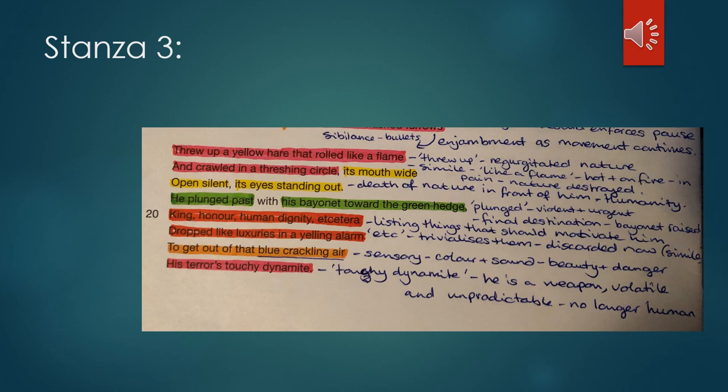And then the final line, which I believe is the point where he becomes and loses all of his humanity and becomes a machine or a weapon, is his terror's touchy dynamite. Touchy dynamite in particular tells us he's a weapon. He's volatile, unpredictable. He's no longer in control. And there's a sense of kind of urgency, of violence, of unpredictability here with him. And he's touchy. It's like he is about to explode. He's been put at his most extreme. And that concludes the stanzas.